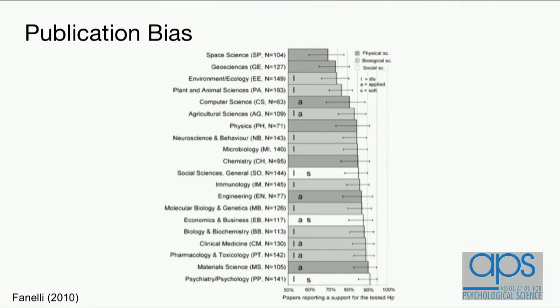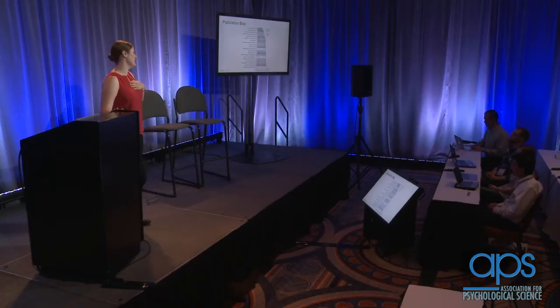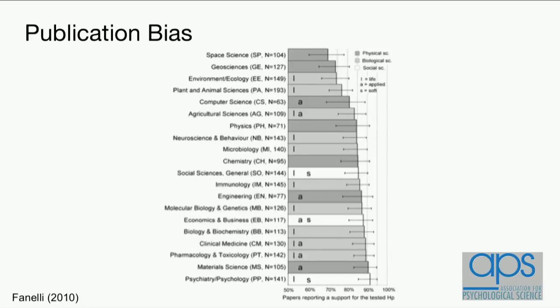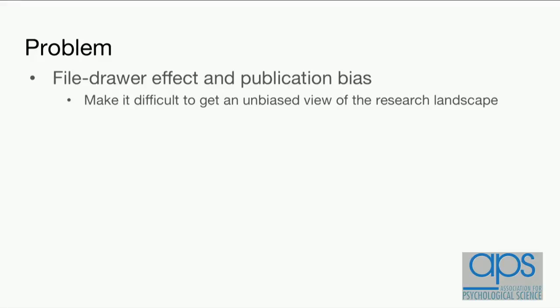This graph shows the percentage of studies in any given field that support their research hypotheses. The low end is space science, still around 70%. Psychology is way up there at 90%. If I knew with 90% certainty before I did anything whether it was going to work out, I would probably play the lottery a lot more. What this graph suggests is that studies supporting their hypotheses are far more likely to get published, creating a bias in the literature that makes it hard to discover studies that don't support their hypotheses.